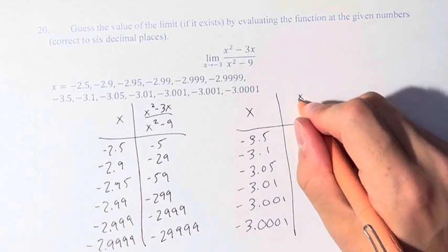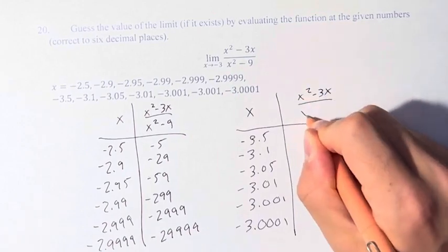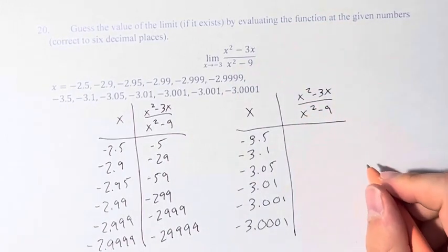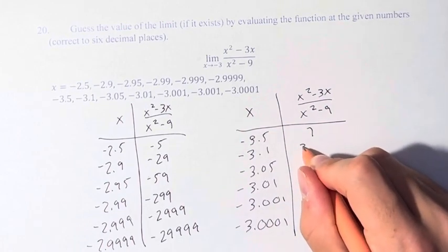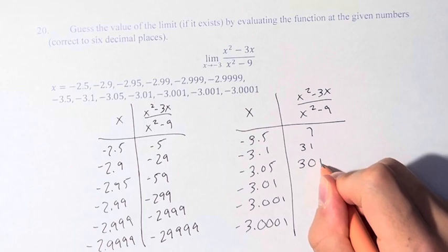And these are as follows, for x squared minus 3x over x squared minus 9. And again, these are so close to whole numbers that you don't even have to put a decimal in. 7, 31, 301.